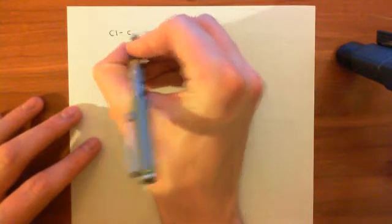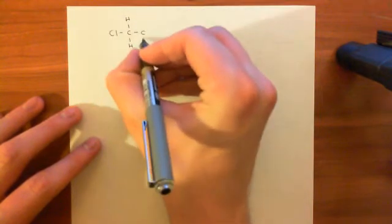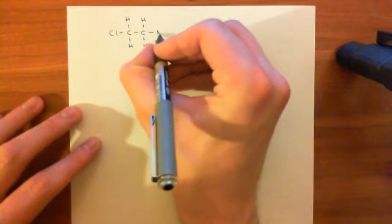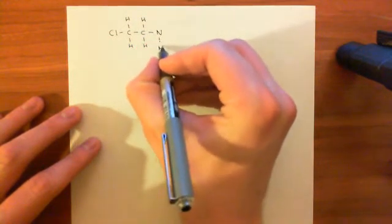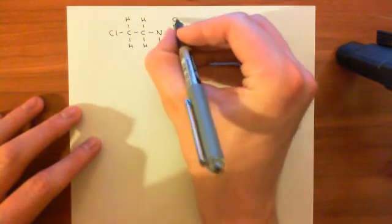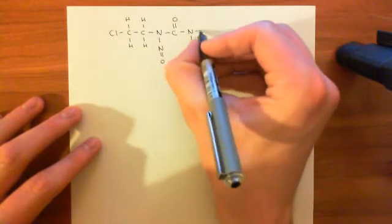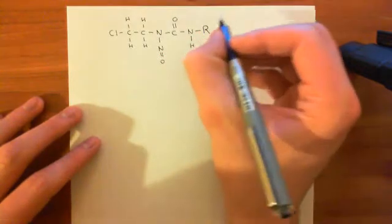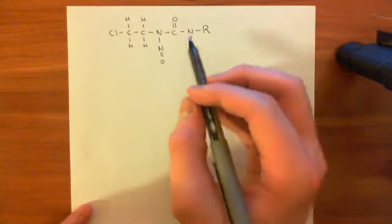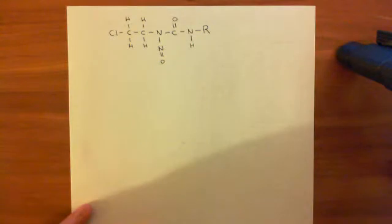We have the chloroethyl group — the ethyl group with the chlorine atom attached — and then it's attached to this nitrosourea group. Here's this nitrogen which has the nitroso group attached. Then off this nitrogen is the carbonyl group, and off this carbonyl group on the other side you have another amino group, which we'll say has an arbitrary R group. Carmustine, semustine, and lomustine all fall into this structure.